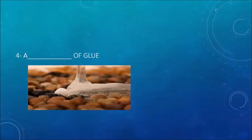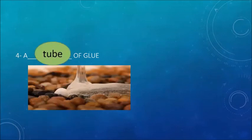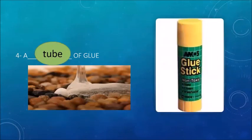A ___ of glue. If you look at this picture it is too difficult to count how much glue is there. But if we use the word from the list — a tube of glue — you can have a very good idea about how much quantity of glue one is talking about. So we can see how countable nouns help us develop an estimation about the quantity of uncountable nouns.